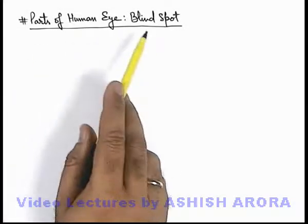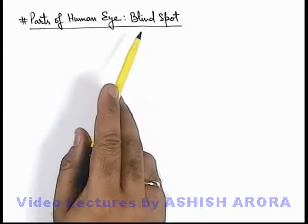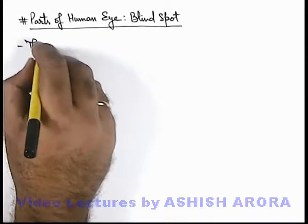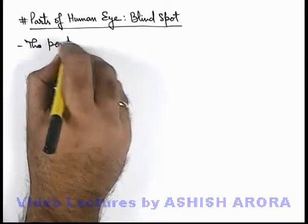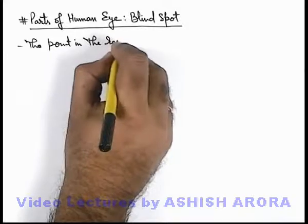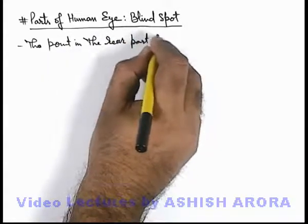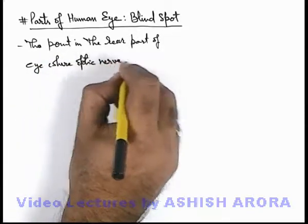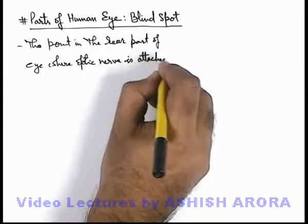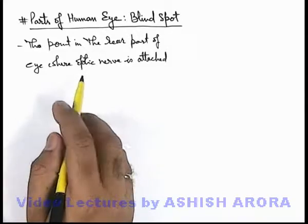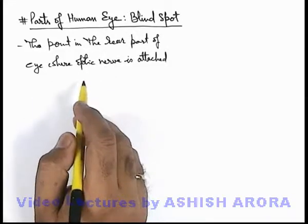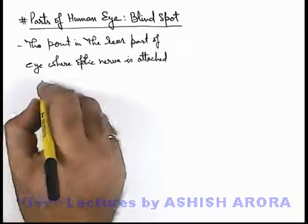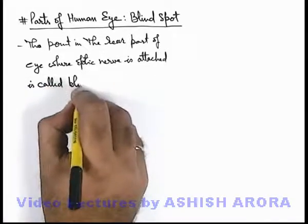Another important part of the human eye is the blind spot. The point in the rear part of the eye where the optic nerve is attached — the optic nerve being the nerve which carries electrical signals from rods and cones to the brain, as we have already discussed — is called the blind spot.